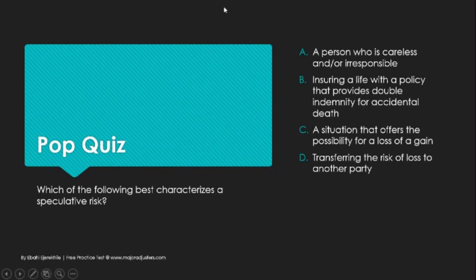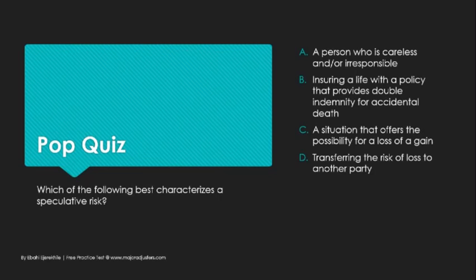Pop quiz: which of the following best characterizes a speculative risk? The answer is C — a situation that offers the possibility of a loss or a gain.